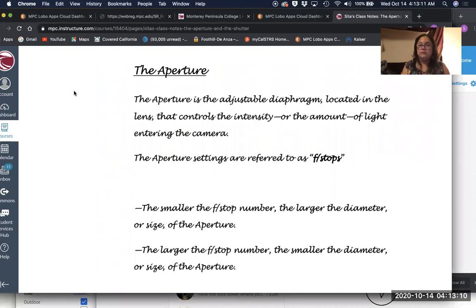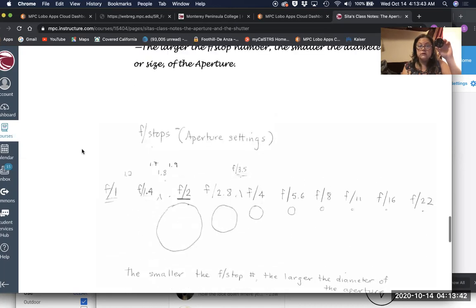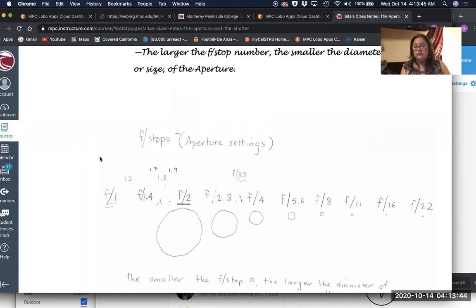So the aperture is the adjustable diaphragm located in the lens that controls the intensity, or the amount of light entering the camera. And again, the aperture settings are referred to as f-stops. Here's the general rule: the smaller the f-stop number, the larger the diameter or size of the aperture. And the larger the f-stop number, the smaller the diameter or the size of the aperture.